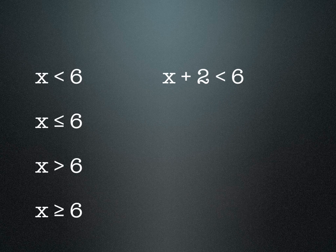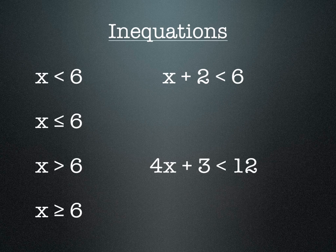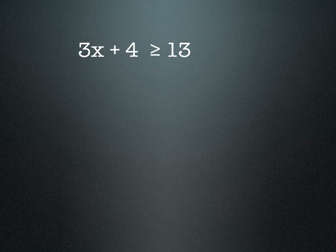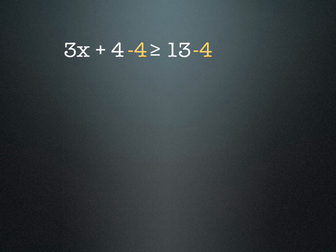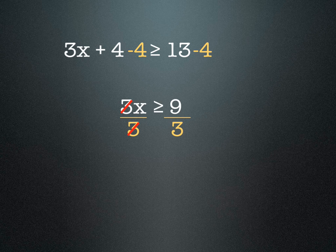We can have statements like x plus 2 is less than 6, which means x must be less than 4. We can also have statements like 4x plus 3 is less than 12. These are called inequations because instead of an equal sign we have an inequality sign. For example, 3x plus 4 is greater than or equal to 13. We subtract 4 from both sides to get 3x is greater than or equal to 9, then divide both sides by 3, leaving x is greater than or equal to 3.